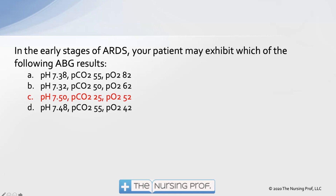If you picked C, you would be correct: a pH of 7.50, a CO2 of 25, and a PO2 of 52.